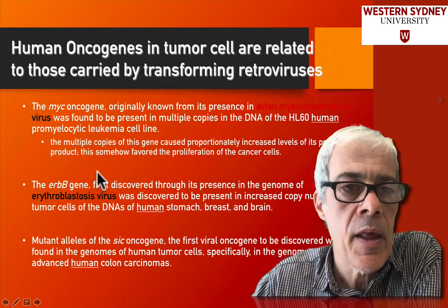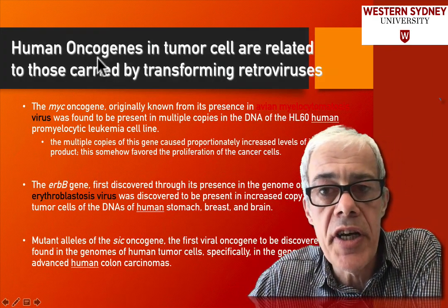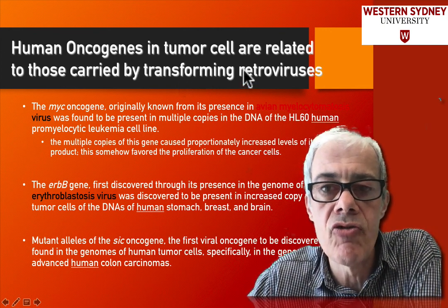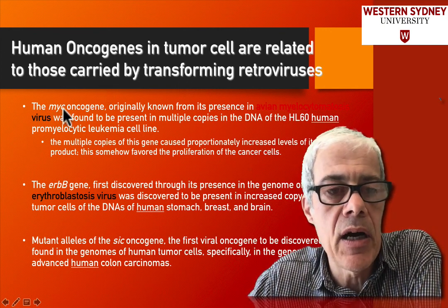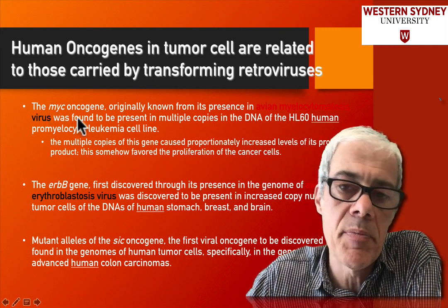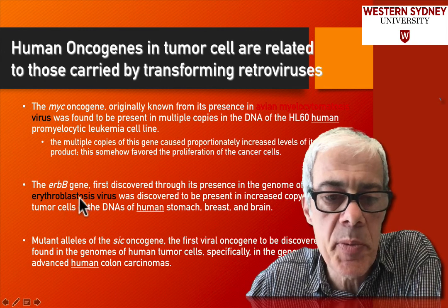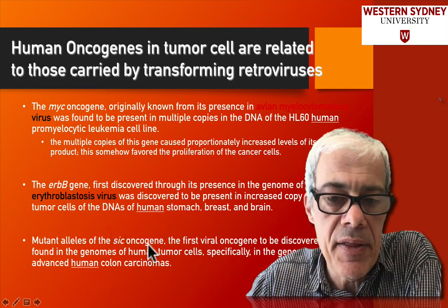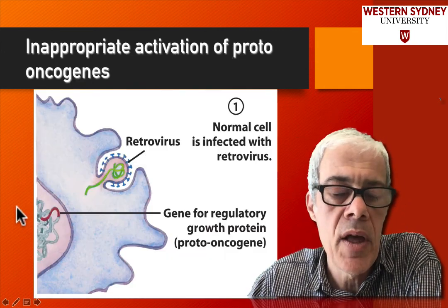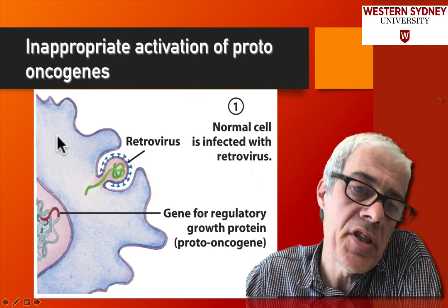These human oncogenes were being picked up by transforming retroviruses. There's a human gene called the myc gene that's been picked up by one virus type, there's the erb gene that has been picked up by another virus, and there's a whole bunch of these genes. So how do these genes get picked up by a virus?